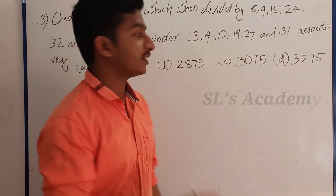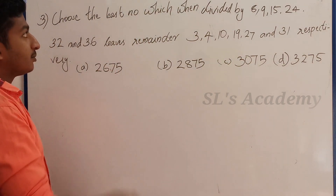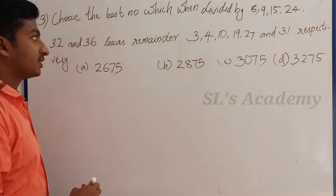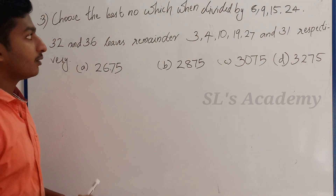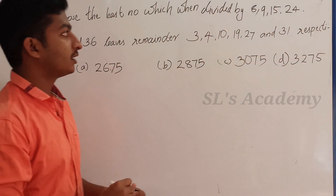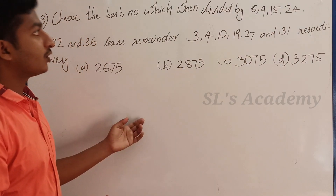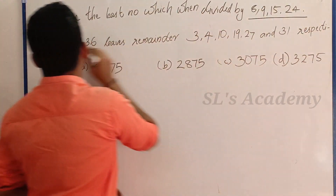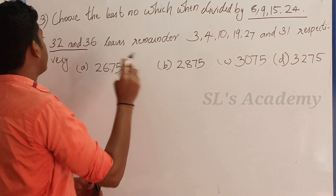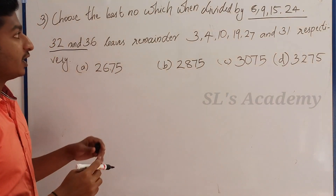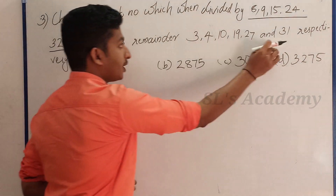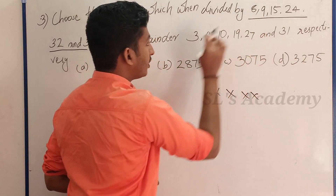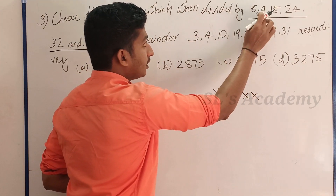The next question: choose the least number which when divided by 8, 9, 15, 24, 32, and 36 leaves remainders 3, 4, 10, 19, 27, and 31 respectively. Now we need to find the LCM of 8, 9, 15, 24, 32, 36. The remainder difference is 5 throughout.